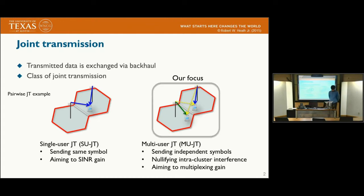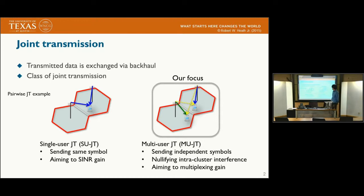But multi-user transmission, which is our focus, has cooperating base stations send independent symbols to two independent users while nullifying the intra-cluster interference. This mainly aims to enhance multiplexing gain because it sends two independent symbols to different users.